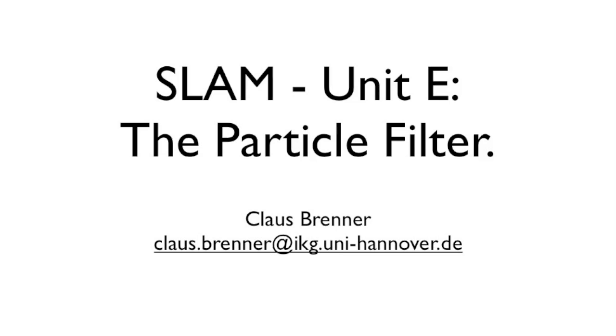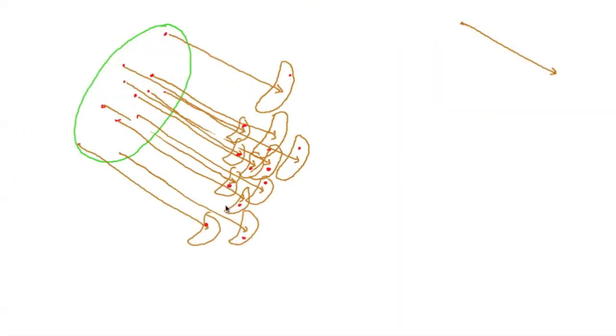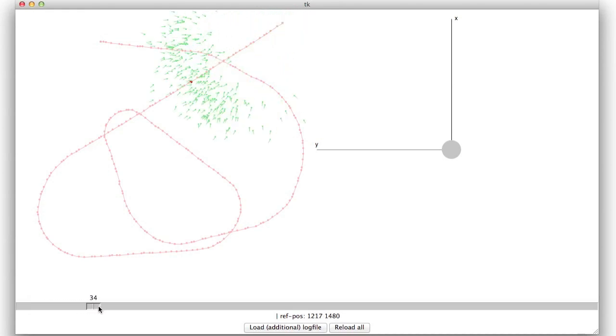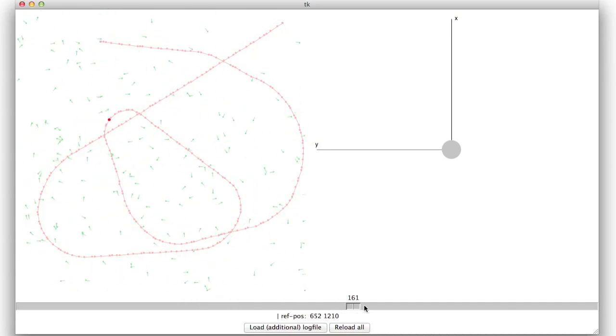In unit E we will have a first look at the particle filter which represents the distribution by a set of hypothetical states or particles. The implementation of the prediction step is rather easy and as expected we obtain a set of particles which diverge.